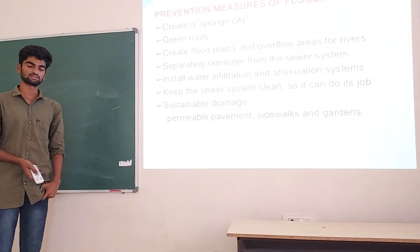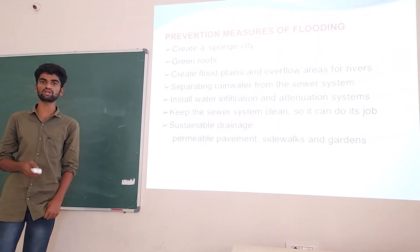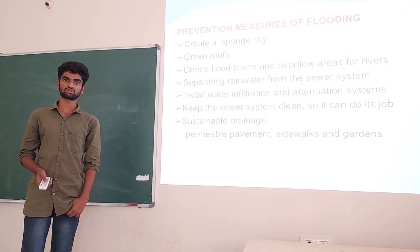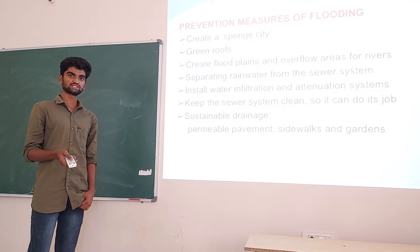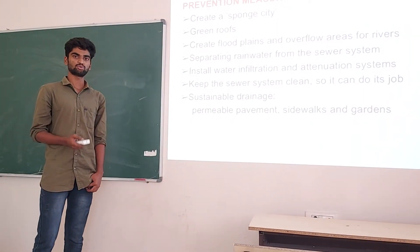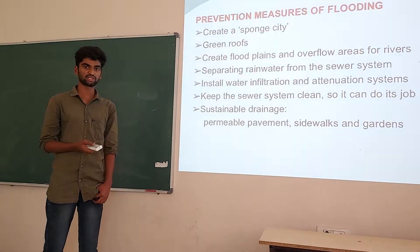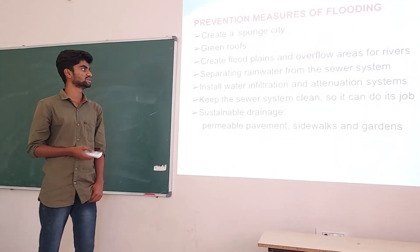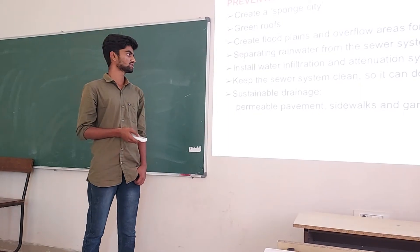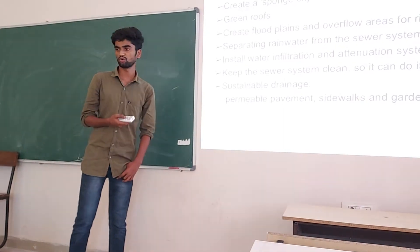Prevention measures of flooding. Some of the prevention measures include developing sponge cities. The idea of a sponge city is to make the city permeable so it can hold and use the water that falls upon it — responsively absorbing rainwater, which is naturally filtered by soil and reaches urban artifacts. To improve the city's capacity for absorbing water, new porous materials and technology must be increased. Other examples include creating floodplains and overflow areas, separating rainwater from the sewer system, installing water infiltration and attenuation systems to keep the sewer system clean, and building sustainable drainage like permeable pavement, sidewalks and gardens.